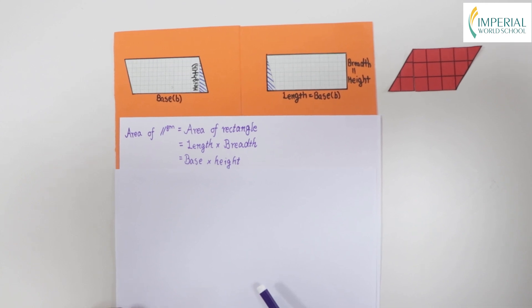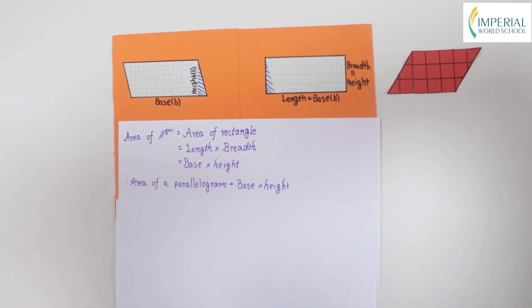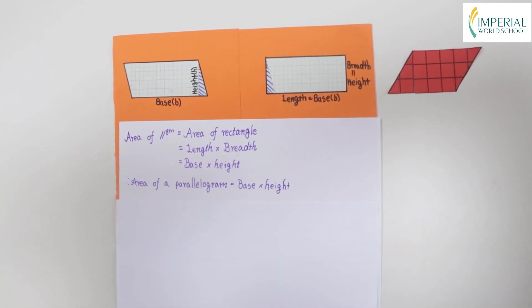So in conclusion the area of a parallelogram is base into height. With this we have come to the end of my explanation to the area of a parallelogram. I hope you have understood how we can learn about the area of a parallelogram through paper cutting method. Thank you.